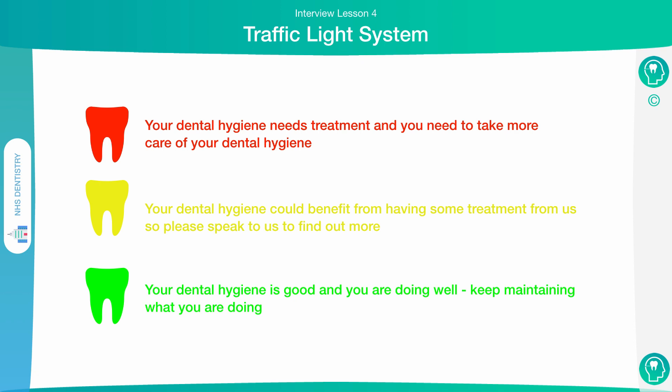If you get given a red, it means your oral hygiene needs attention — you need treatment, and you also need to take care of your oral hygiene a lot better, and the dentist will give you advice on how to do this. If you get given a yellow, this means you could benefit from some treatment, and you should speak to the dentist to find out how you could do better to look after your teeth, and what kind of things they can offer you.